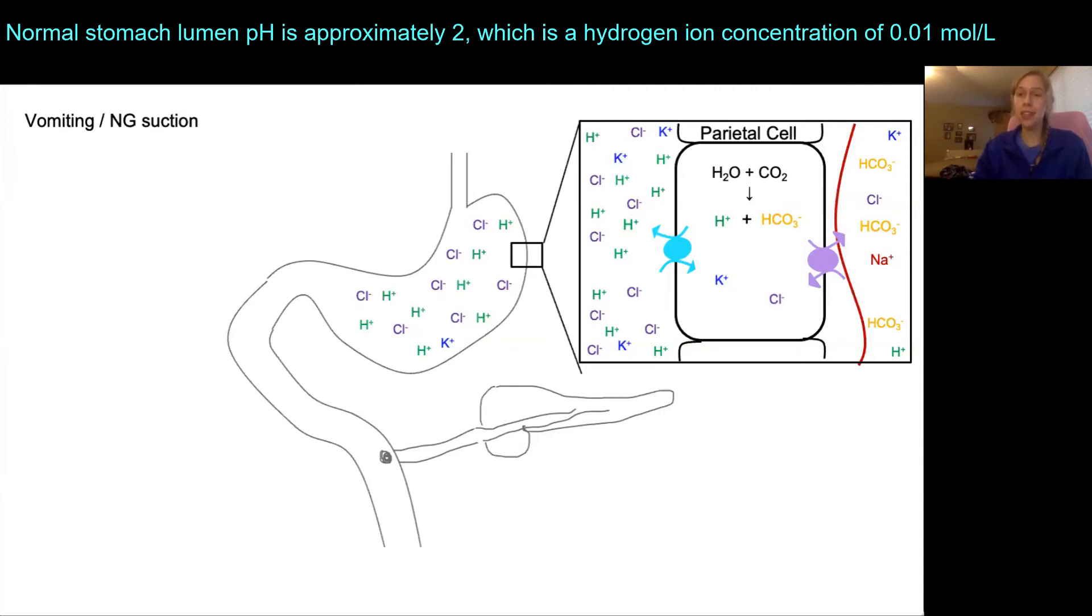But, in the case of vomiting or excess NG suction, we are losing some of that acid out of the body.